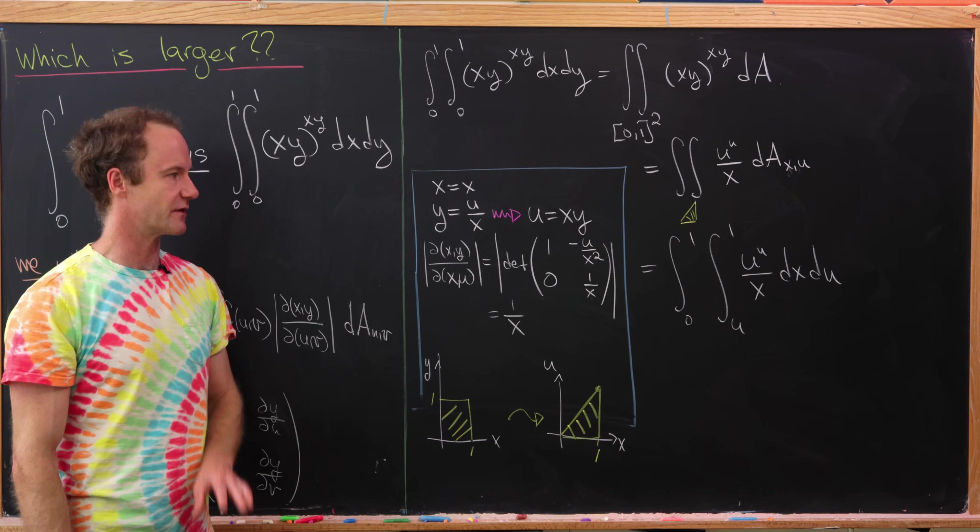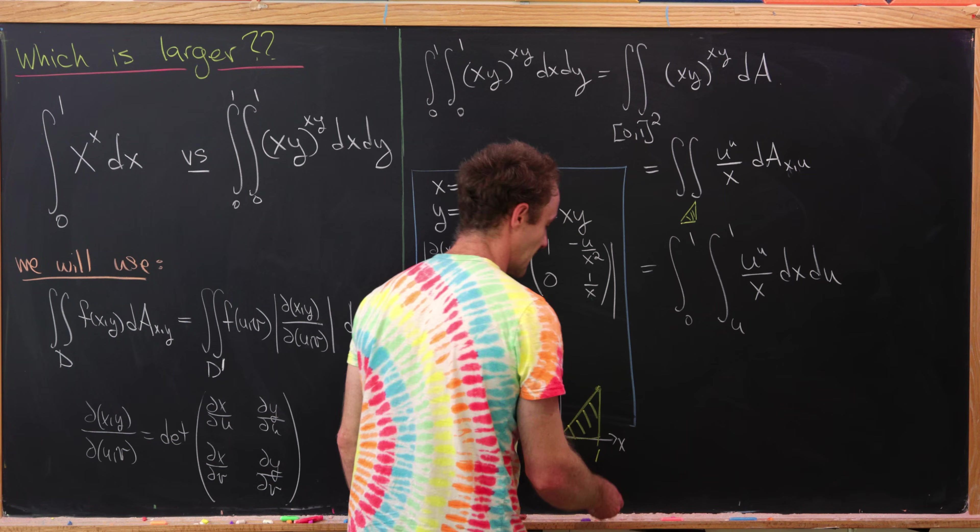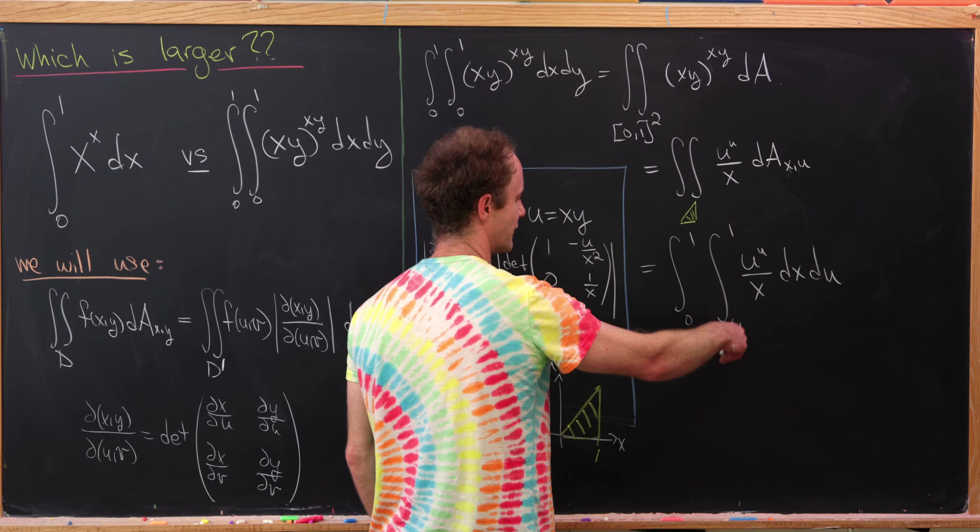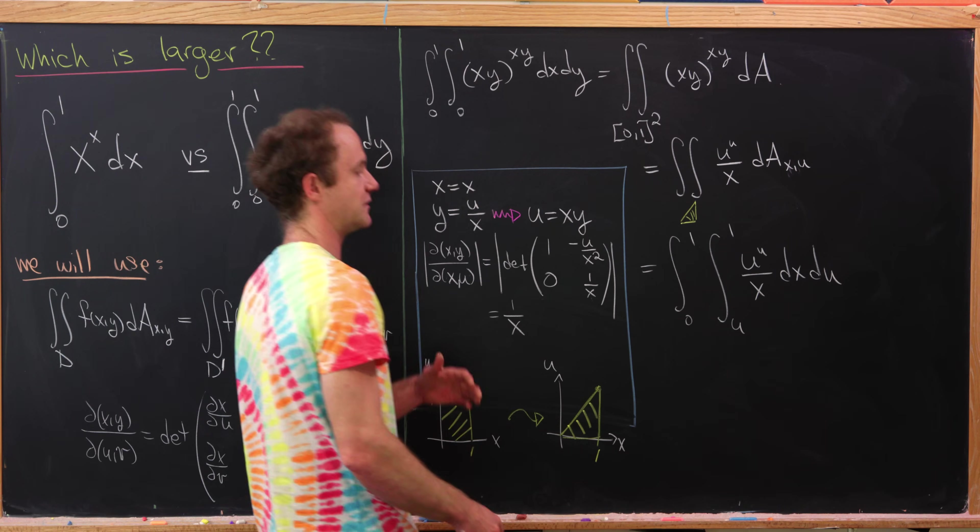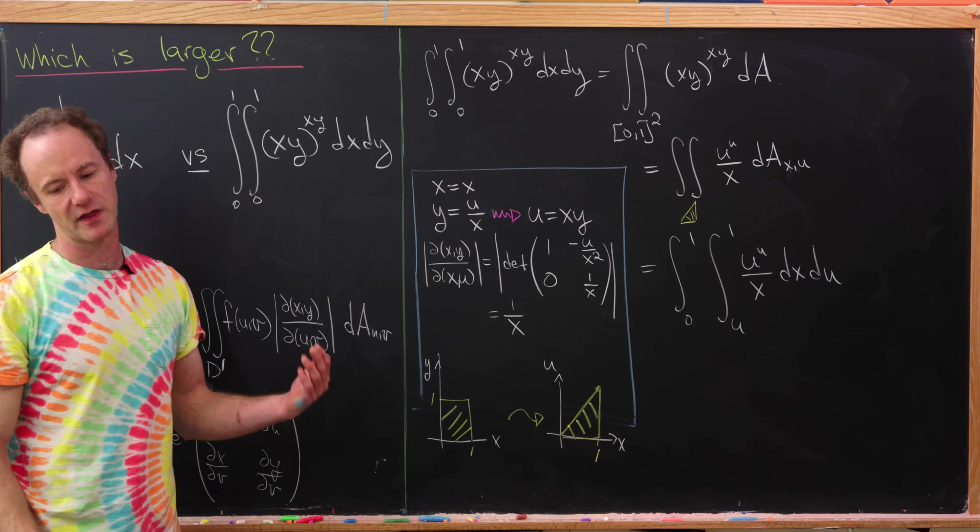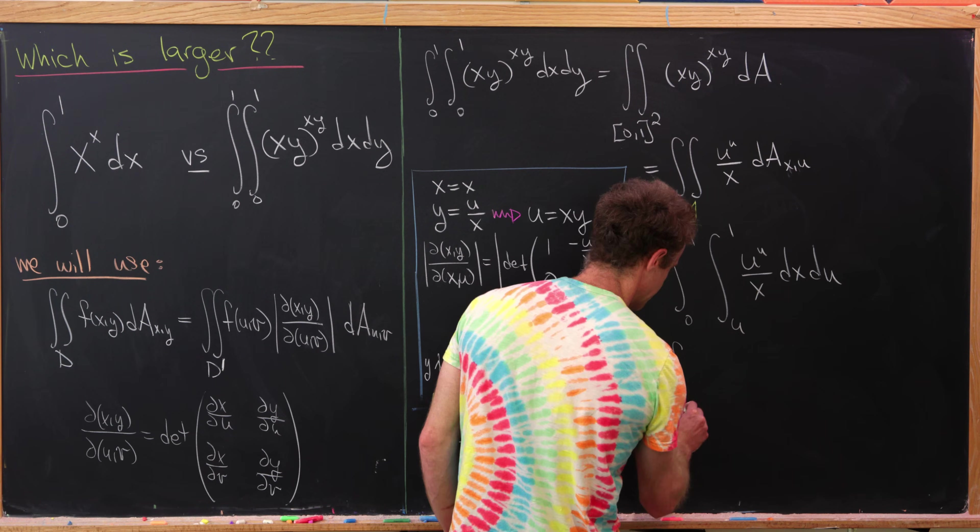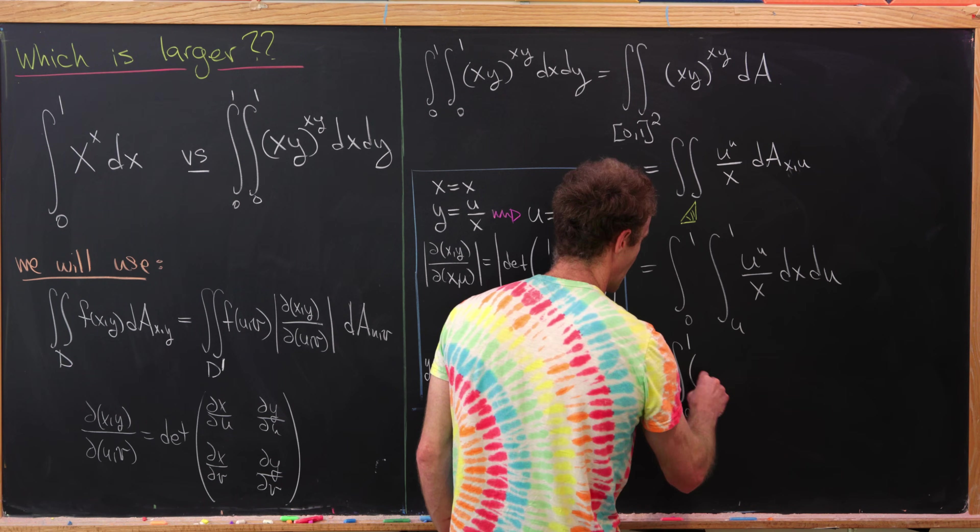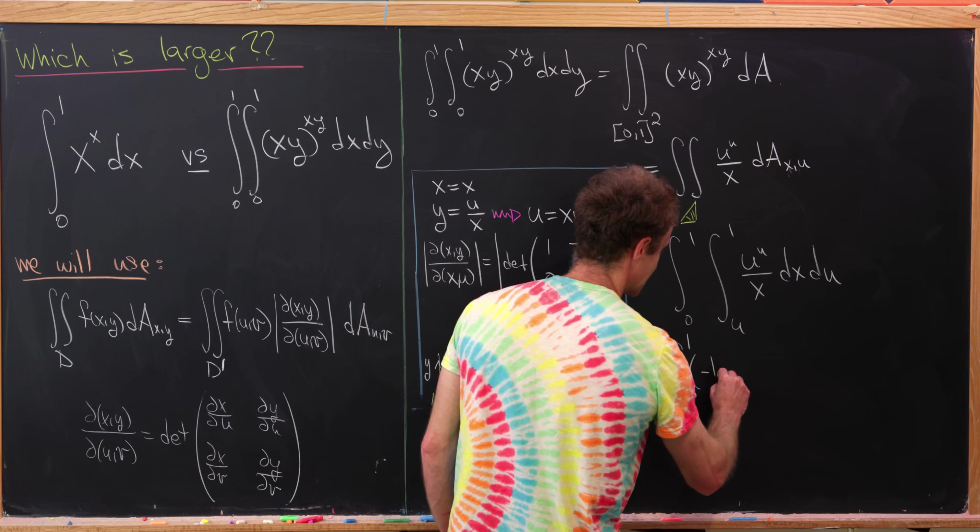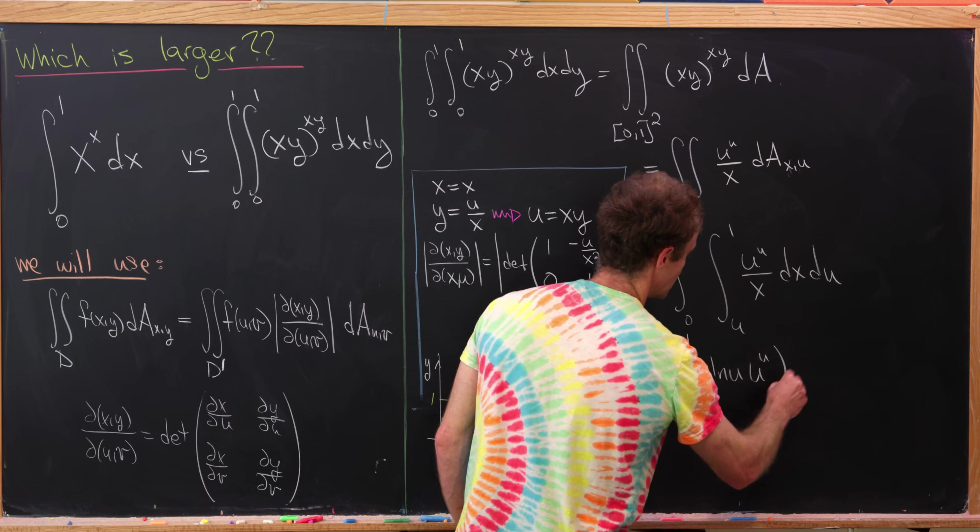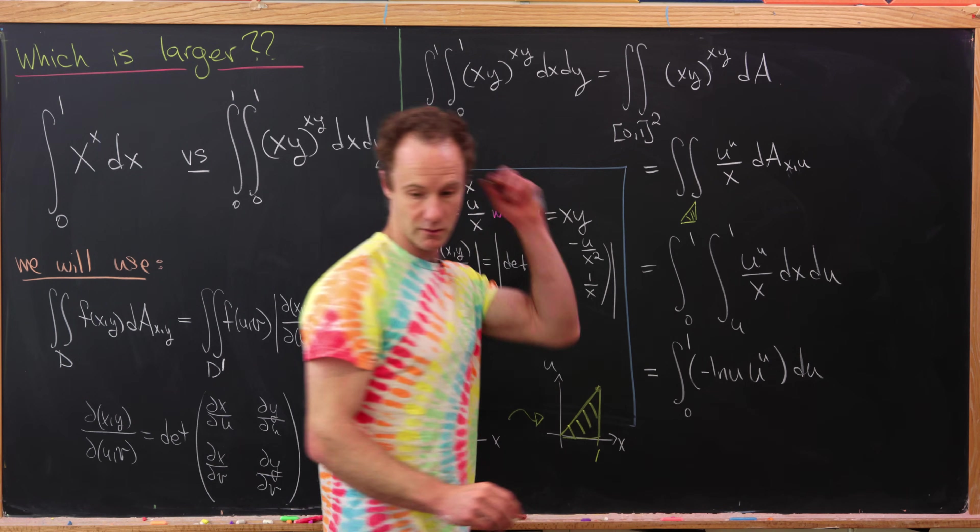There's no closed antiderivative. But now that inner integral is not so hard. We'll get the natural log of x evaluated at 1 is 0, evaluated at u will be the natural log of u. But since that's the lower bound, that'll pick up a minus sign. So that'll give us the integral from 0 to 1 of minus natural log of u times u to the u, and then we'll have du. Good.